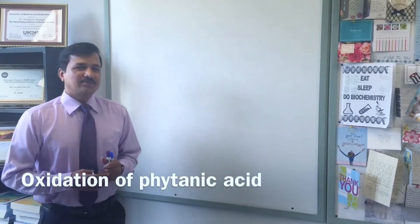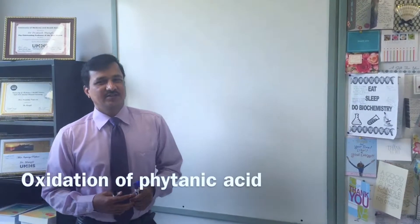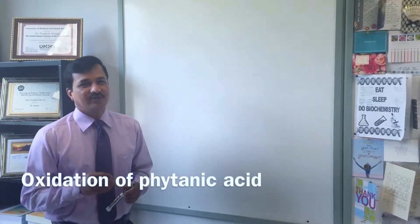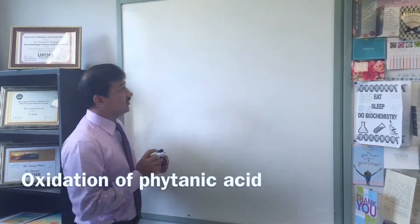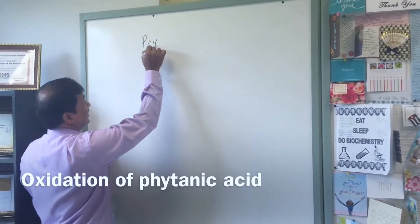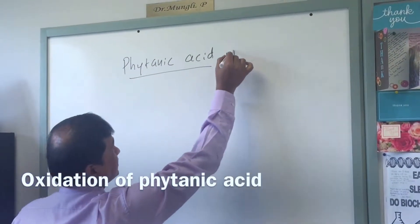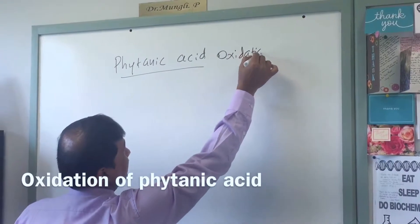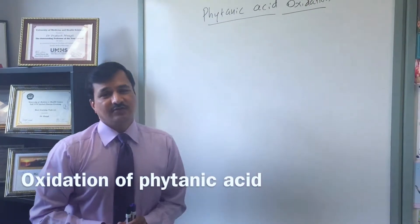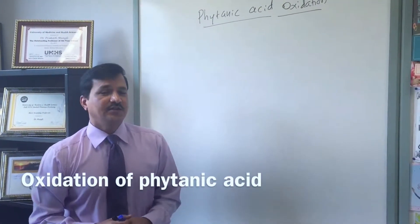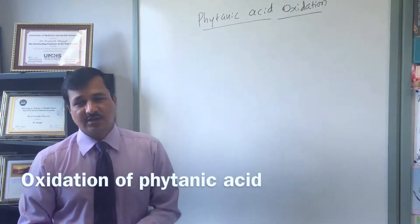Hello everyone. Today I am going to explain alpha oxidation. Basically in our body, alpha oxidation is needed for oxidation of a fatty acid called phytanic acid. So today we are going to see the oxidation of phytanic acid. Phytanic acid is basically a derivative of chlorophyll degradation in our intestine, or it may be from chlorophyll degradation in animals which eat grass, like ruminant animals.